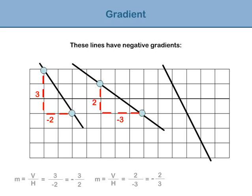Let's look at one final example. V equals 4 and H equals negative 2. M equals 4 divided by negative 2, so the gradient M equals negative 2.